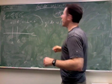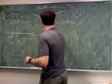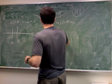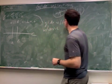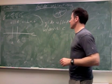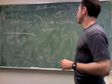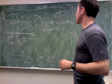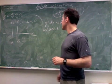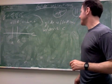This glide reflection has axis line C. So let's try and figure out its key properties.